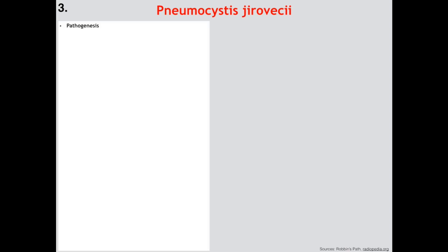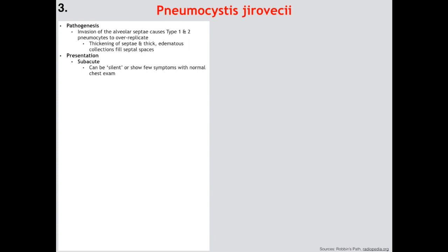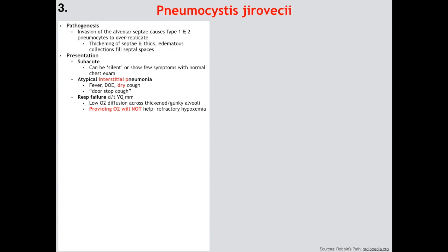The one pathology we need to know is PCP pneumonia. This starts with invasion of the alveolar septae, causing type 1 and type 2 pneumocytes to over-replicate. This leads to thickening of the septae as well as thick edematous fluid filling the septal spaces. Clinically it can have a subacute silent form, but more commonly presents as atypical interstitial pneumonia with fever, dyspnea on exertion, and a dry cough — remember, dry cough. In more severe cases the patient may present with respiratory failure due to a V/Q mismatch from low O2 diffusion across the thickened alveolar septae. Refractory hypoxemia will also occur, meaning providing O2 will not help.